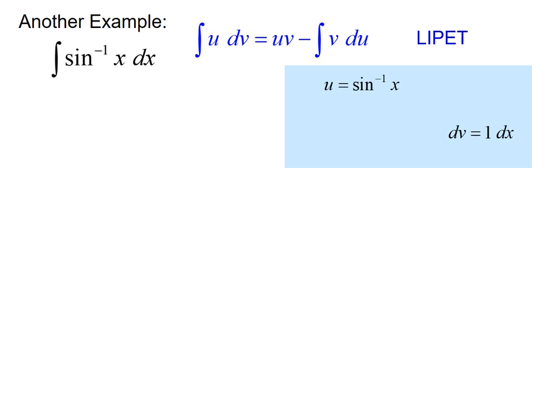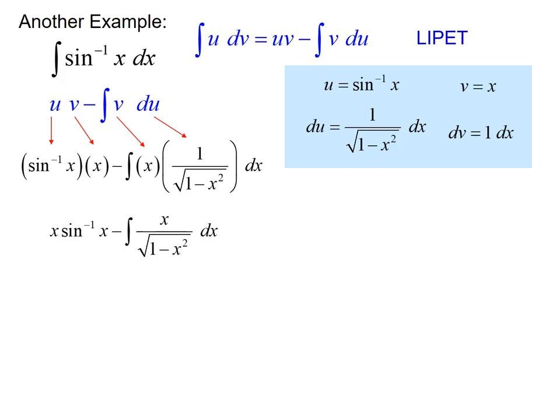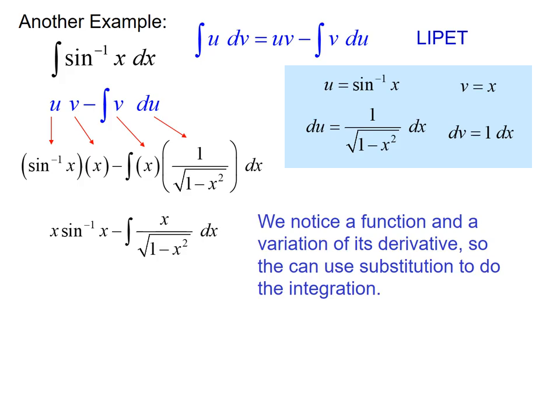So u is inverse sine, dv is 1 dx, we can find du, we can find v. And using our integration by parts formula, the left side is x inverse sine of x minus the integral of x over root 1 minus x squared dx.